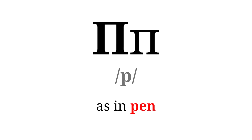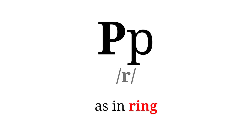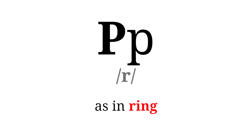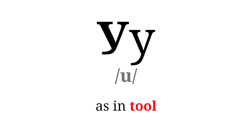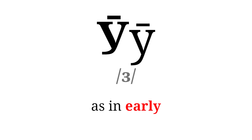P like 'pen' or 'Peter Parker.' R as in 'ring' but tougher — not the soft R; it's R where your tongue vibrates. S as in 'sea.' T like 'time,' 'table.' U like 'tool.' E like 'early' or 'occur.'